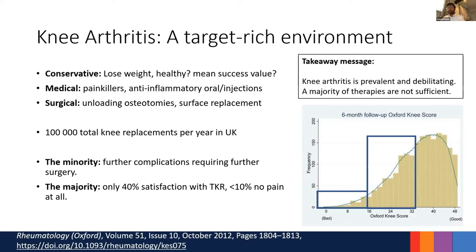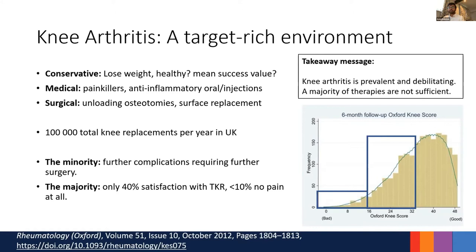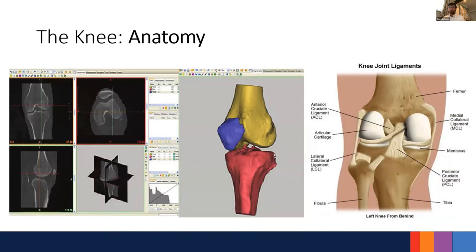The key takeaway is that knee arthritis is prevalent and debilitating, and the majority of therapies we have so far are not sufficient. The question is: why hasn't this been fixed? In large part it's because the knee, unlike many other joints in the body, is really quite incredibly complex in the way it is formed and in what it does.